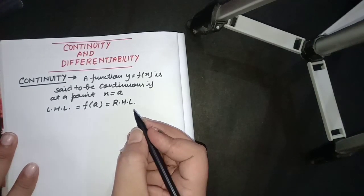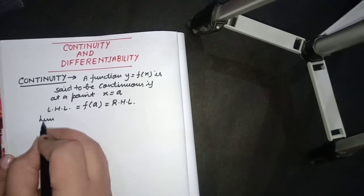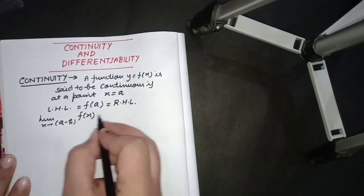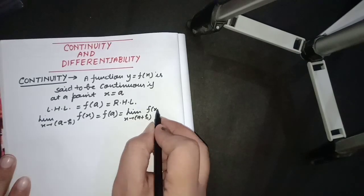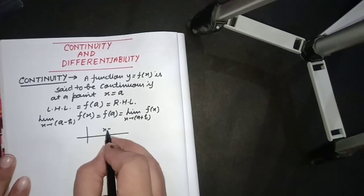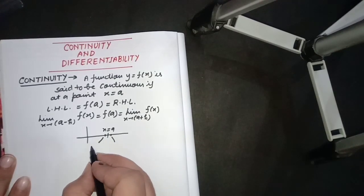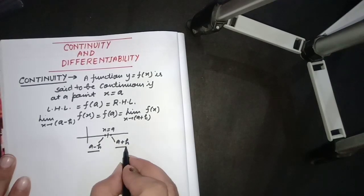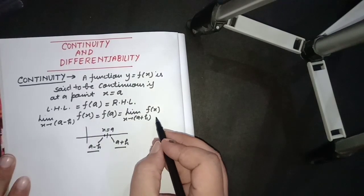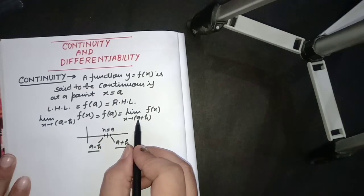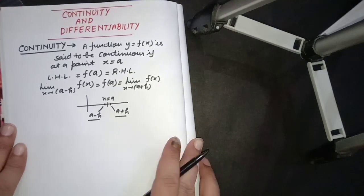Limits have been discussed in our previous videos, so you can watch those for knowledge about limits. The left hand limit can be written as limit x tends to (a minus h) of f(x), and similarly the right hand limit as limit x tends to (a plus h) of f(x). The two points in the neighborhood of point x = a are a minus h and a plus h. The condition is that left hand limit, functional value, and right hand limit must all be equal for the function to be continuous. Geometrically, a function is continuous if there is no break in its graph.